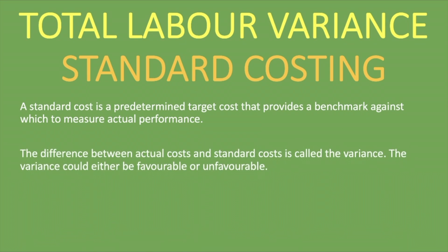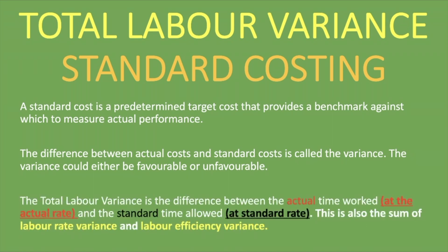The difference between actual costs and standard costs is called the variance. The variance could either be favorable or unfavorable. The total labor variance is the difference between the actual time worked at the actual rate and the standard time allowed at the standard rate. It is also the sum of the labor rate variance and the labor efficiency variance.